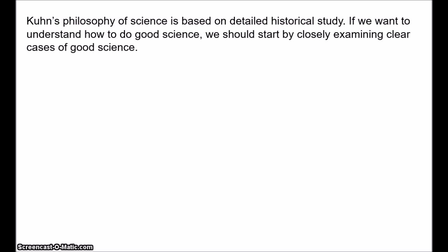For the hypothetical deductivists and for Popper and the falsificationists, philosophy of science is basically a normative discipline — the point is to describe the methodology that scientists ought to follow. It tells us how science should work in ideal circumstances. In principle, there might never have been any people who actually adopted this methodology.